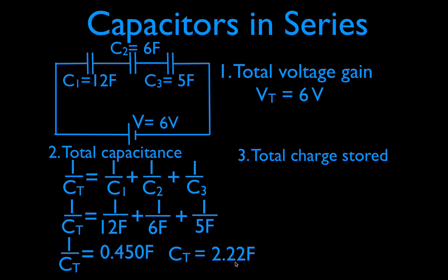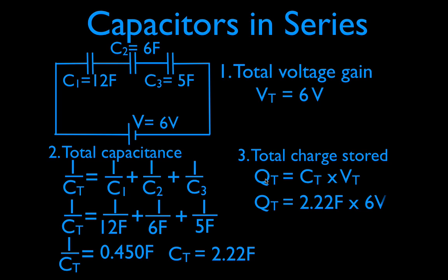Now we get the total charge. In order to get the total charge, we're going to use the capacitor equation: Q equals C times V. We want to find the total charge Q_T. In order to do that, we have to use the total capacitance and the total voltage — use the totals. So Q equals 2.22 times 6 volts, and the total amount of charge stored in that circuit is 13.3 coulombs.